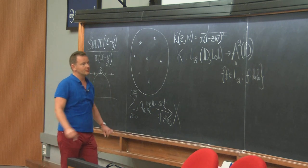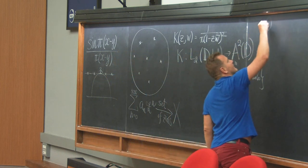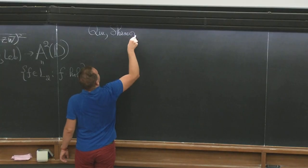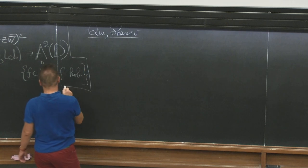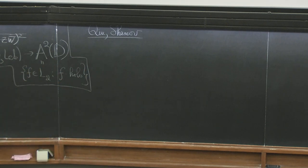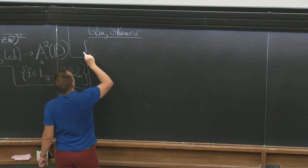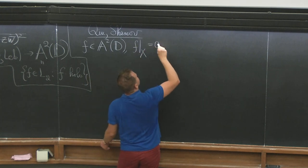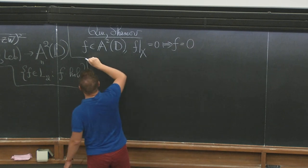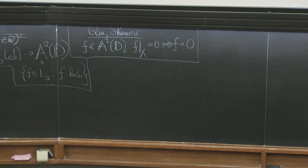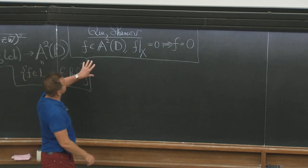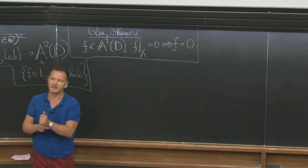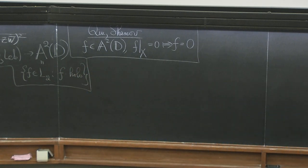The theorem obtained in joint work with Qiu and Shamov says the following: if f belongs to the Bergman space and f restricted to the configuration x equals zero, then f equals zero. This is a more general theorem — Gauch obtained a particular case for the sine process, and we obtained it in full generality. The general statement is that the reproducing kernels of a determinantal point process generate the ambient Hilbert space. The precise formulation will be given as the course progresses.